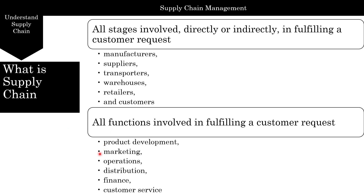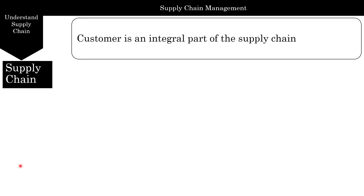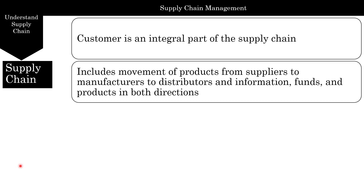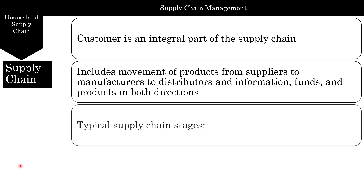All functions involved in fulfilling a customer request come under supply chain. This includes product development, marketing, operations, distribution, finance, and customer service — all these form a chain resulting in fulfilling a customer request. The supply chain includes movement of products from suppliers to manufacturers then to distributors, and not just the product but also information, funds, and products in both directions.